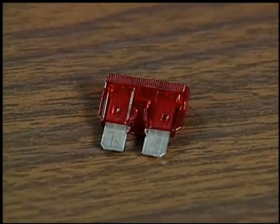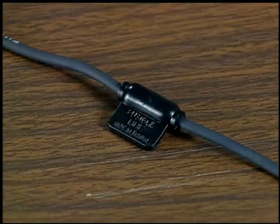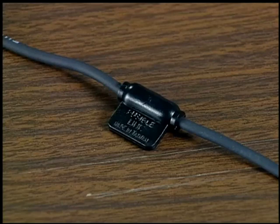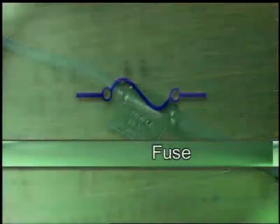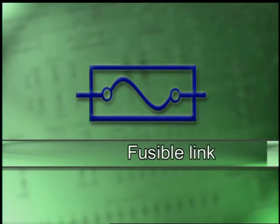A fuse or fusible link is used to protect a circuit against a high current flow that could damage the circuit. A fuse is represented by a wavy line between two circles, while a fusible link includes the symbol for a fuse inside a rectangular box.